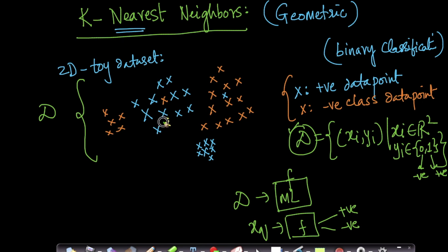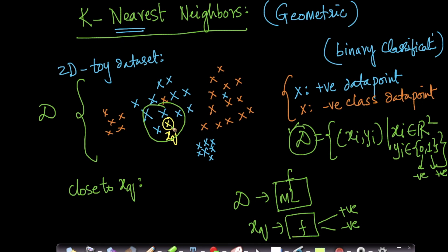Let us take a query point xq. Given this query point — which I'm coloring in yellow and putting in a circle — I want to determine whether this point is blue or red. Intuitively, one thing you will quickly notice is: if you look at all the points which are geometrically close to xq, the neighborhood of xq, you will find mostly blue points. Because xq lies in the neighborhood of blue points, I could conclude that xq is also a blue point — a positive label — just by using proximity.